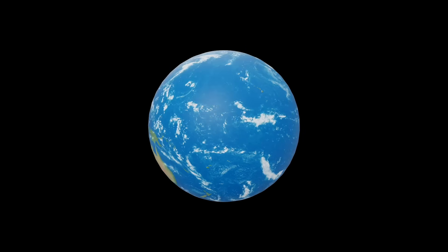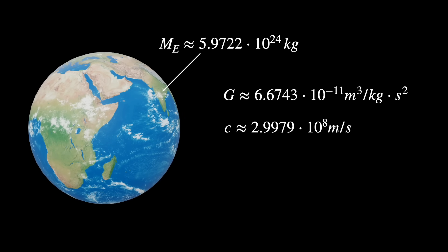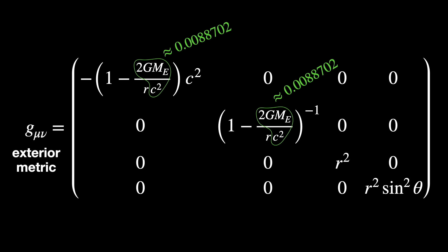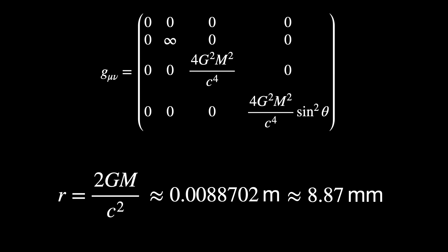Third: singularity. Let's start with the exterior metric, using Earth as our massive body. Substituting the gravitational constant G and the speed of light c, if R equals 2GM/c², which is approximately 8.87 millimeters for Earth, we get a degenerate metric — which is actually nonsense, because a point at that distance is inside the planet, so we cannot use the exterior metric there. This is a contradiction; the correct approach would be to use the interior Schwarzschild metric.